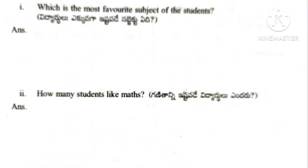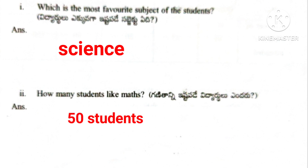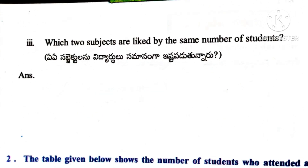Based on the above graph, here are some questions. Question number 1: Which is the most favorite subject of the students? Answer: Science is the most favorite subject. Second question: How many students like maths? Answer: 50 students like maths. Question number 3: Which two subjects are liked by the same number of students? Answer: Telugu and Social.